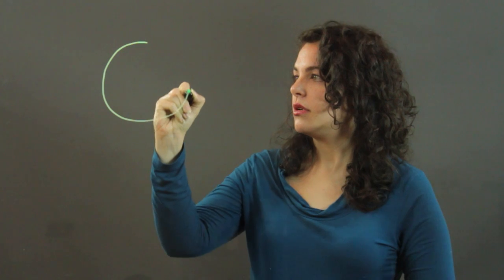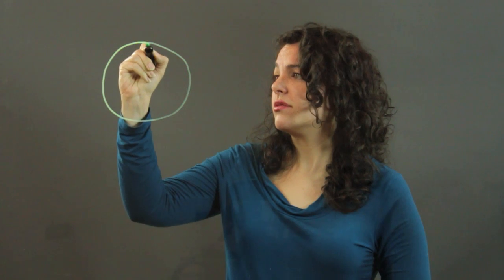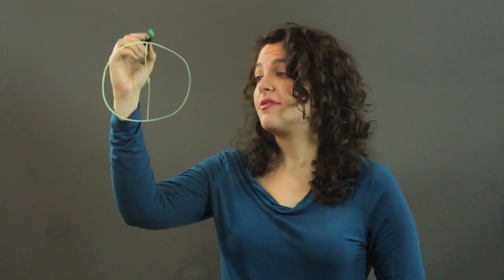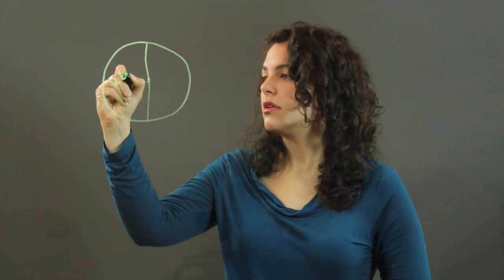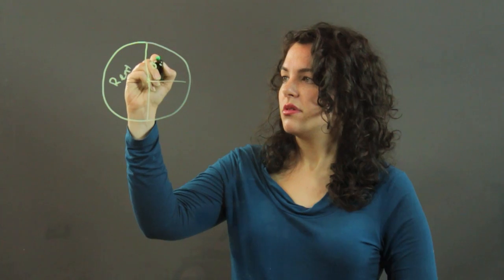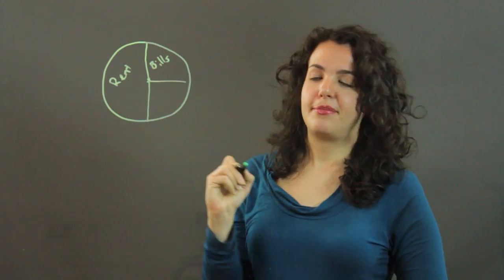So let's say we have a pie chart, and maybe we're showing income where 50%, half of it goes to rent. And we see maybe a quarter goes to all the other bills we have to pay.